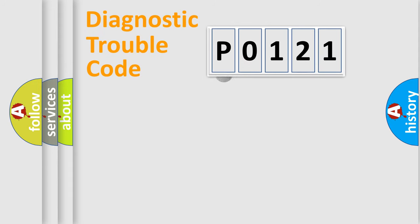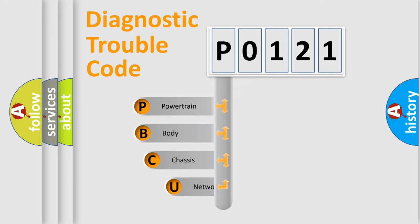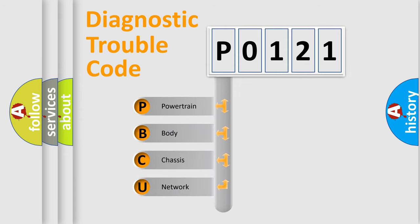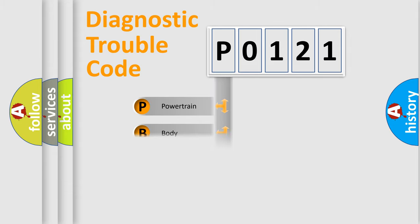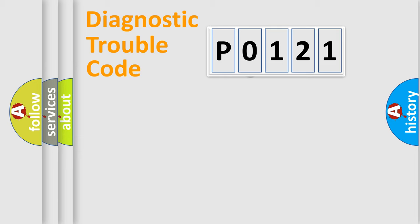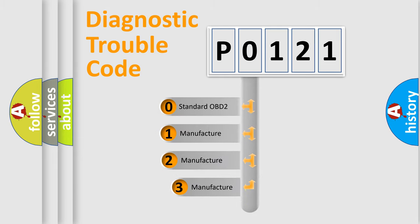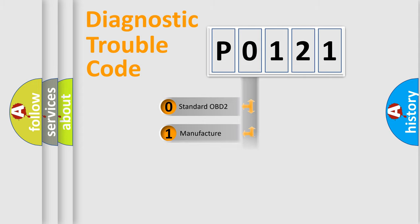First, let's look at the history of diagnostic fault code composition according to the OBD2 protocol, which is unified for all automakers since 2000. We divide the electric system of an automobile into four basic units: Powertrain, Body, Chassis, and Network. This distribution is defined in the first character of the code. If the second character is expressed as zero, it is a standardized error. In the case of numbers 1, 2, or 3, it is a more manufacturer-specific expression of the error.